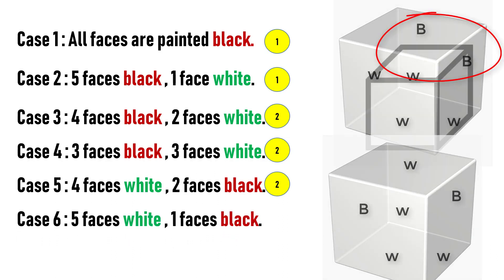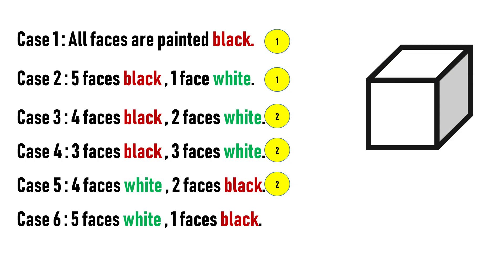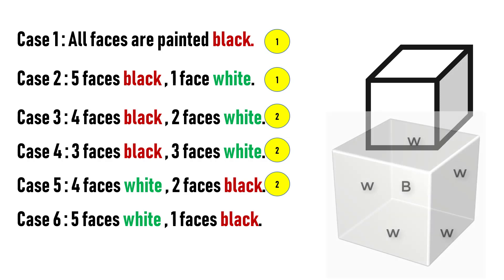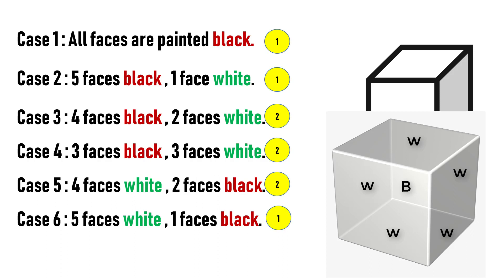In case six, let's assume one face is painted black and five faces are painted white. This is similar to case two. There is only one possibility, since the cube is a symmetrical figure on all its faces. That's why six cases will reduce to one.